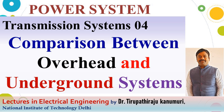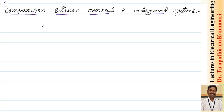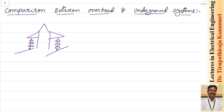Today we are going to discuss a comparison between overhead and underground systems. In the overhead system there will be a tower, and from the tower there will be insulators hanging, and the conductor will be placed on them. Similarly on the second side there will be an insulator and the conductor will be lying accordingly, whatever the number of circuits are there.